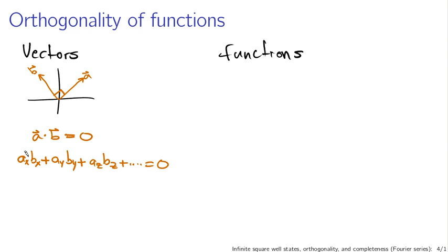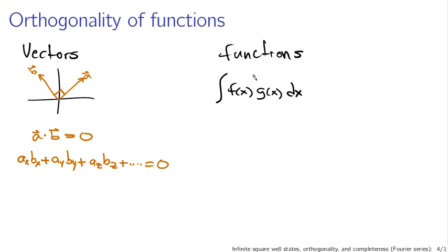What does it mean to multiply two functions like this? In the case of vectors, we were multiplying like components — both x components, both y components, both z components. In the case of functions, we can multiply both functions' values at particular x coordinates and add all those up. What that ends up looking like is an integral: the integral of f(x) g(x) dx. I'm scanning over all values of x instead of scanning over all dimensions, and multiplying the function values at each individual point and adding them all up. You can think of this as, in some sense, a dot product of two functions.